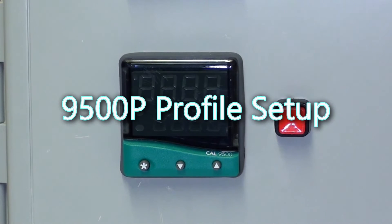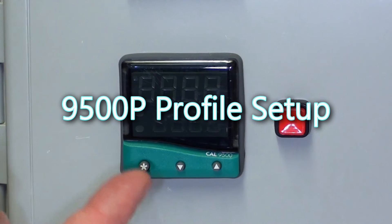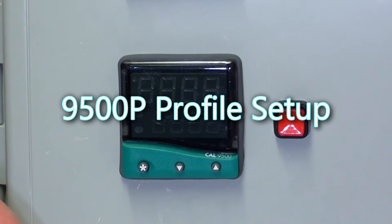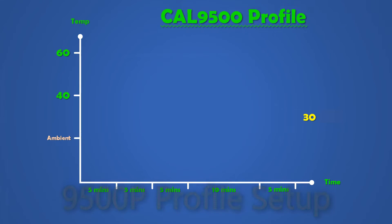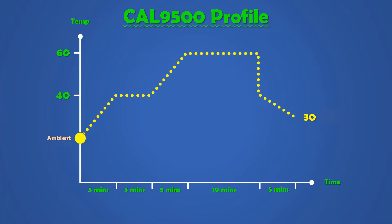This video will explain how to use the Cal 9500P as a profiler. This is the program that we want to run. We want it to ramp up to 40 degrees C, and then stay there for 5 minutes. And then ramp up to 60 degrees C, stay there for 10 minutes, and then drop down to 40, and then ramp down to 30. And we want that on a loop.